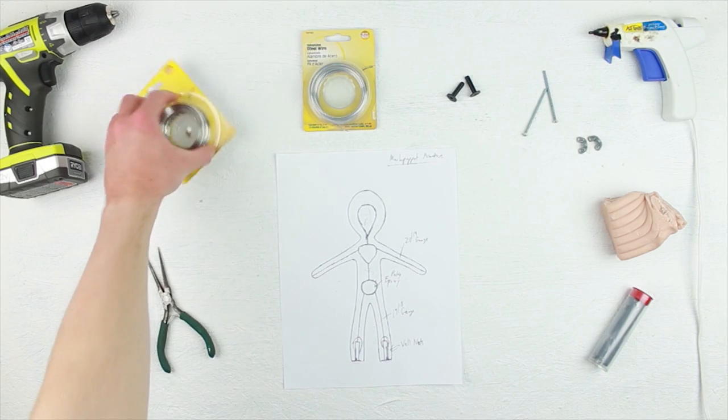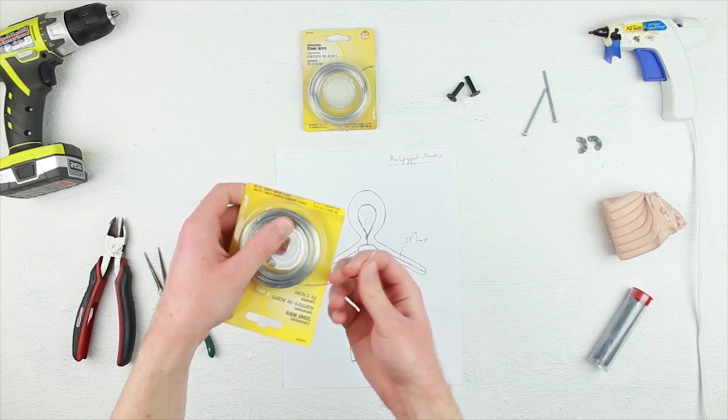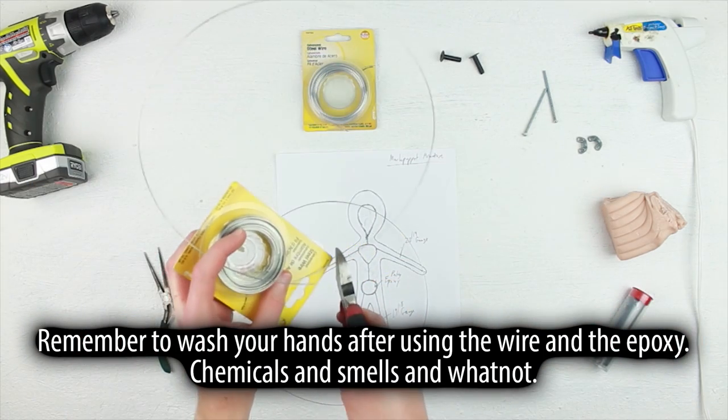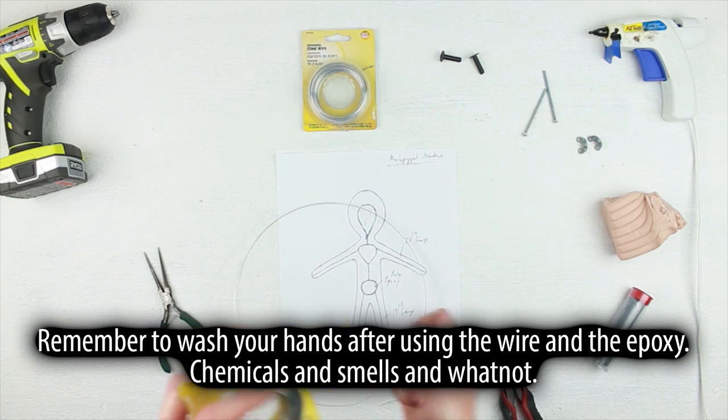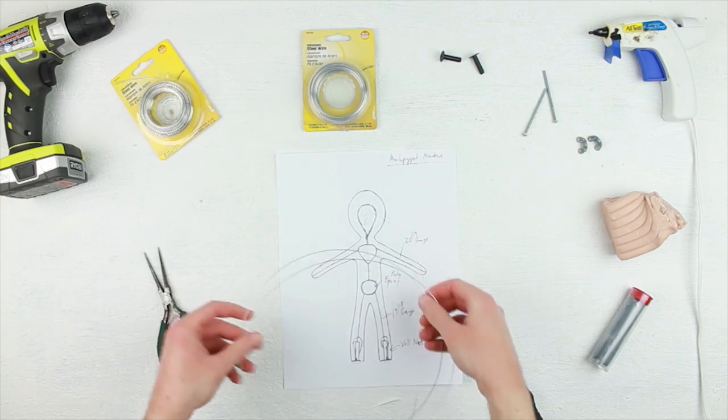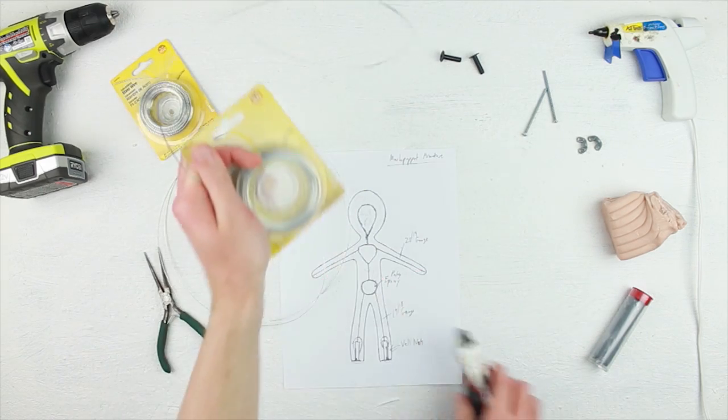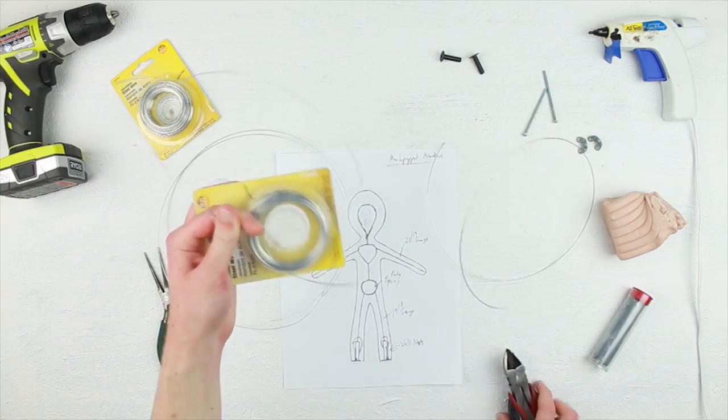First is to cut off two pieces of 19 gauge wire, each around maybe 20 inches or so. It doesn't really have to be particularly exact, just two long pieces! These will end up being the legs and the spine. Do the same with the 20 gauge wire, two pieces, 20 inches or so. And this is going to be for the arms and the head.